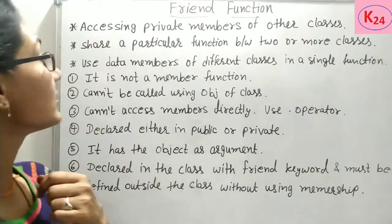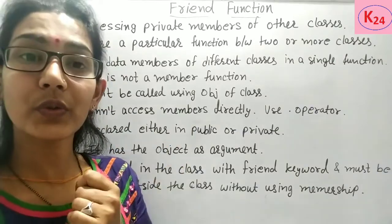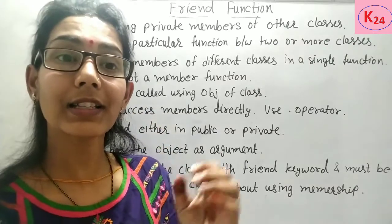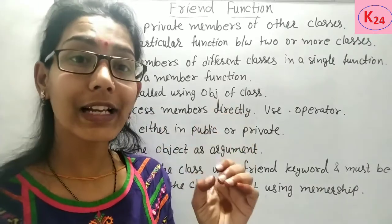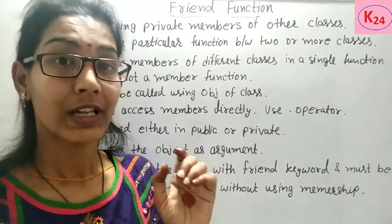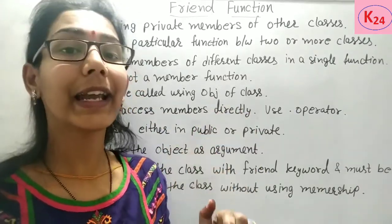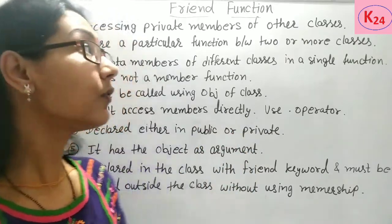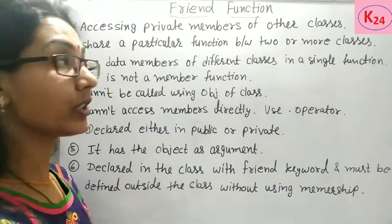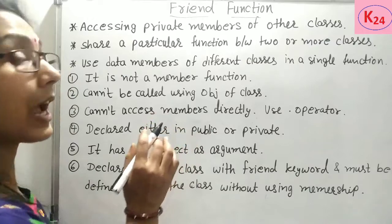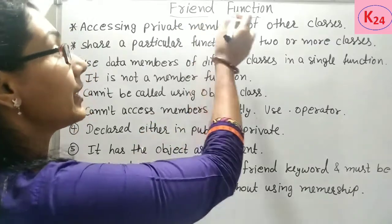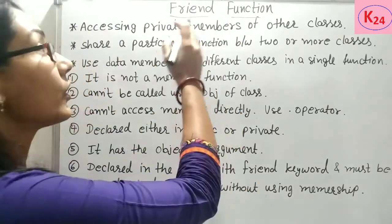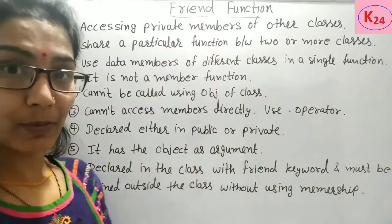And the third situation: suppose we want to use data members of different classes in a single operation of a function — then again the member function will fail. So for all these three situations we have to use friend function. Friend function is the solution for all these three problems.